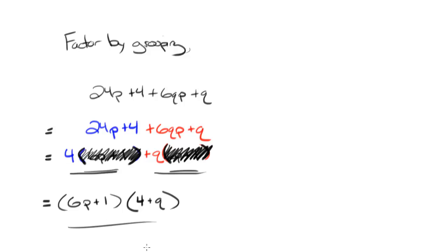And that is my factored form and factored by grouping. What the word factor always means is rewriting the expression as a multiplication of two mathematical objects. And in this case, I have 6p plus 1 times 4 plus q.